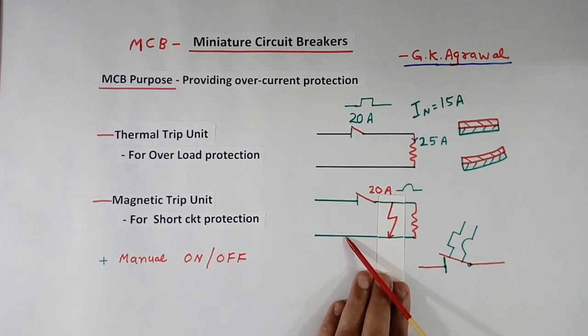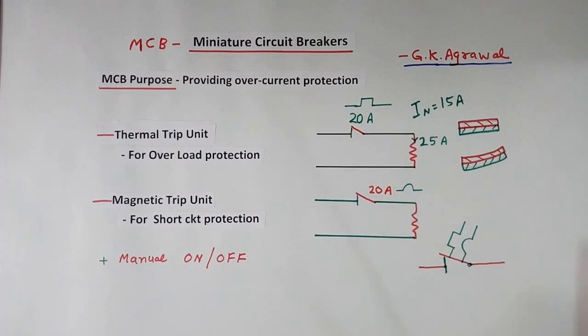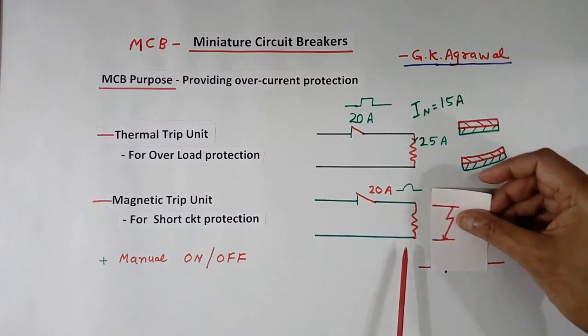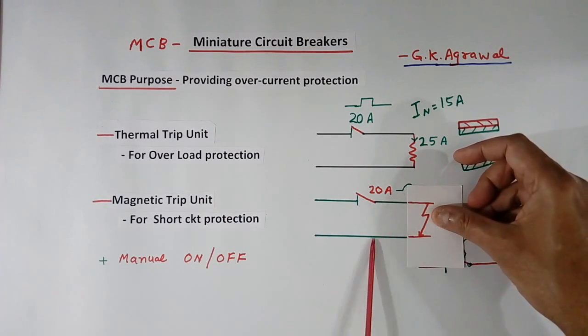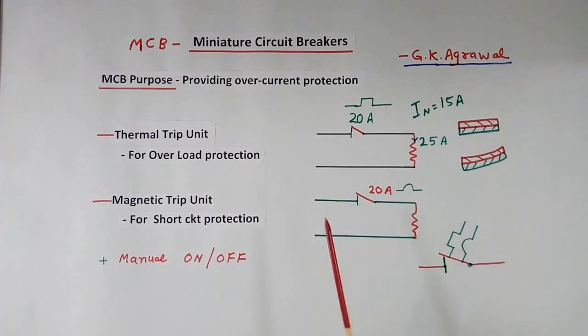So short circuit current will flow like this. Second possibility is that the load itself gets short circuited like this. In both cases, heavy short circuit current will flow here.